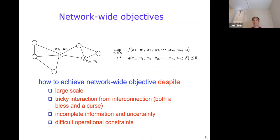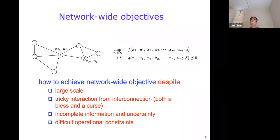Notice that interconnection is both a blessing and a curse. For example, if there's a shock in the system, interconnection may help absorb the shock. But interconnection may also amplify the shock under certain conditions, leading to cascading failures. This has happened to power networks more than once in the last two decades. It has happened to financial markets too. The financial market can be seen as a network of banks, borrowers, and lenders.